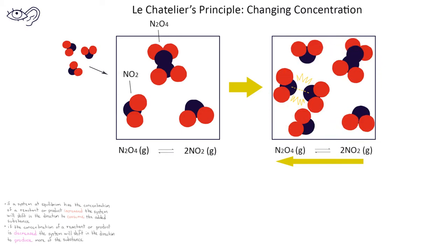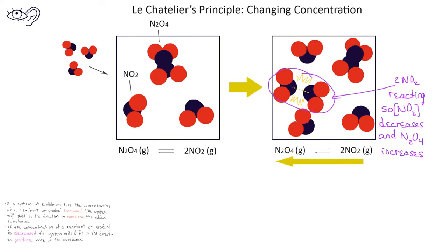What's going to happen since the system is no longer at equilibrium? As the second square shows, the system will move in the direction that will consume some of the added NO2. This way, the reaction will shift from more NO2 on the product side to produce more of the N2O4 on the reactant side.